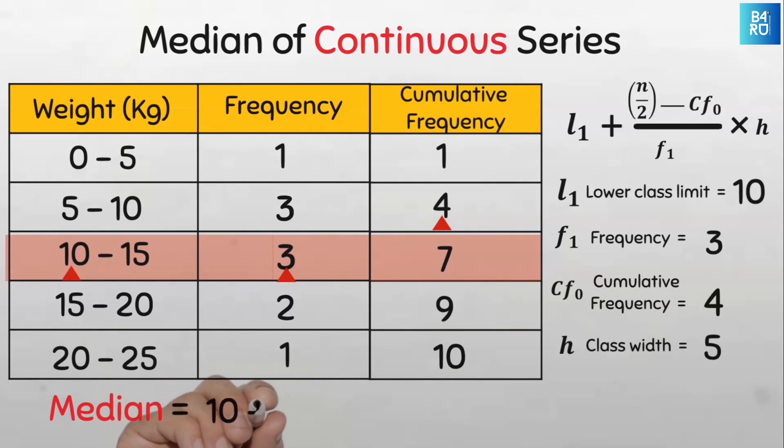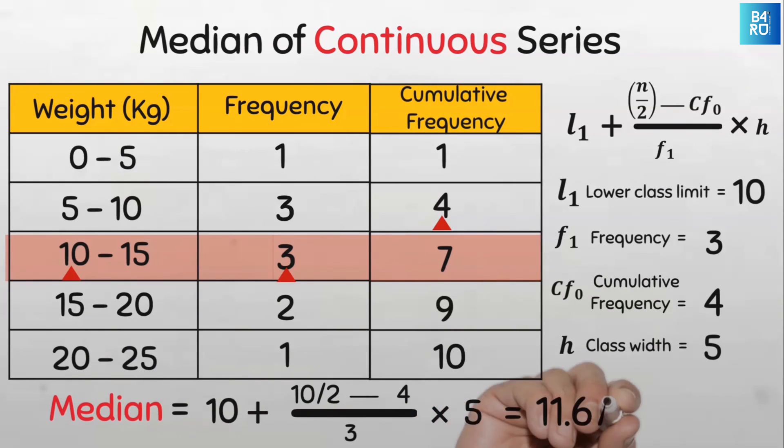So our median is going to be 10 plus 10 divided by 2 minus 4 divided by 3 multiplied by 5. So this is 10 plus 5 minus 4 divided by 3 multiplied by 5. That's 10 plus 1.67. Our median equals 11.67 kilograms. And when you look at it, the median class is 10 to 15 kg, right? And our median falls somewhere in between this interval. So this is how to easily compute the median for continuous series data.